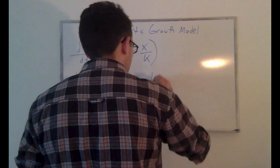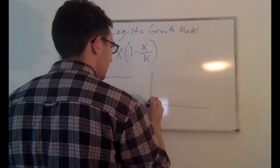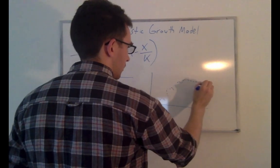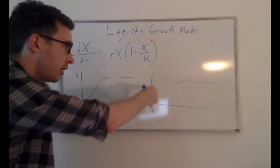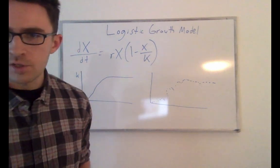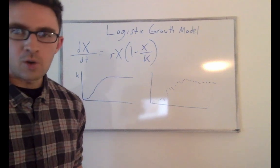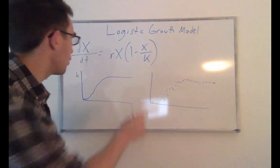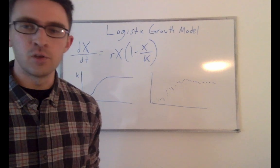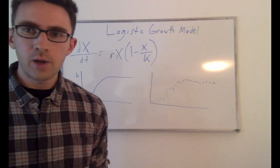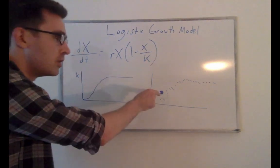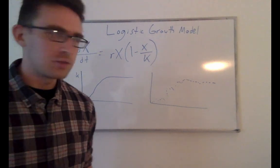I'm going to give you guys a noisy dataset that I produced by running a stochastic simulation in Python. At the end of the video, I'm going to show you what parameters for R and K I actually used to generate this fake dataset. But before then, we're going to use the Markov chain Monte Carlo method to fit the parameters to the data and estimate them.